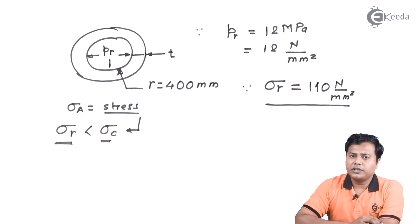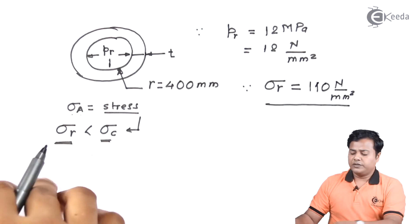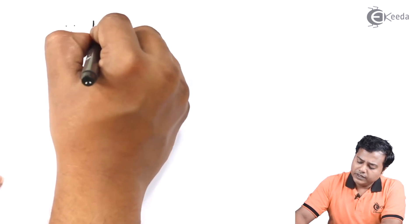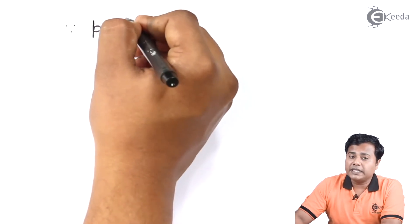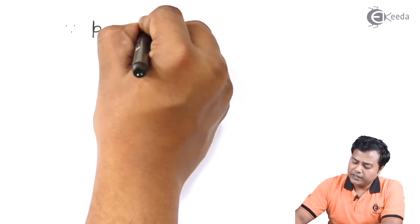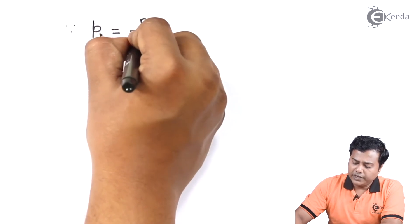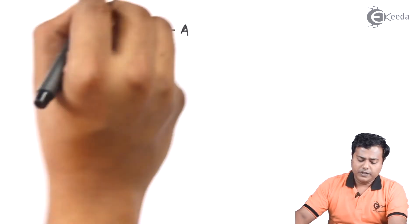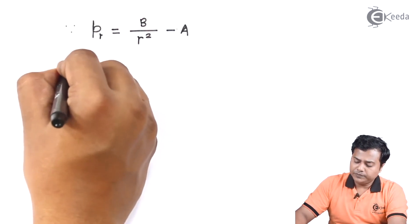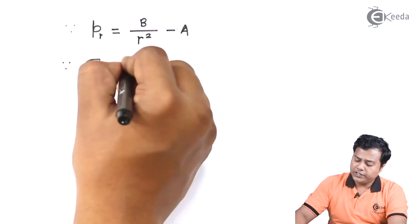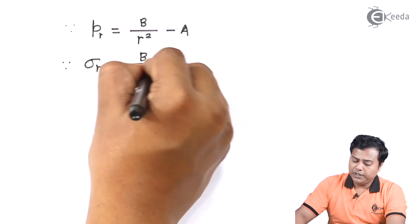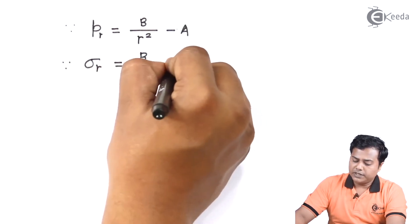So with this data let us proceed. Again we are going to use Lemmy's equation and we know that the radial pressure or the pressure inside the cylinder is given by B divided by small r square minus A. And we also know that the radial stress is given by B upon x square plus A.